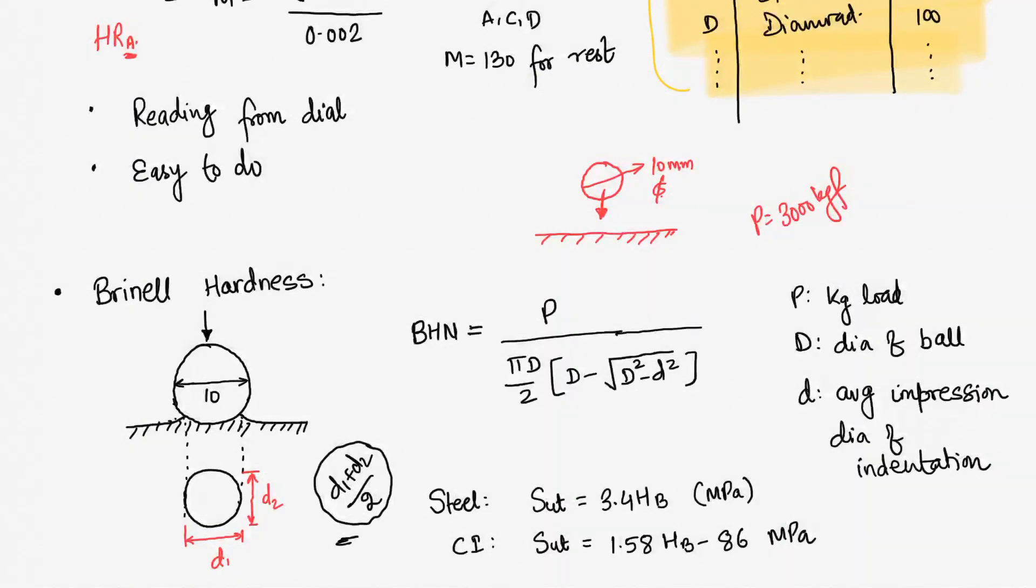And then, whatever will be the surface area of indentation, I am taking the diameter in two perpendicular directions D1 and D2. From D1 and D2, I am calculating the average diameter of the indentation. And using the average indentation diameter, the ball diameter, and the load value, I calculate Brinell hardness number.